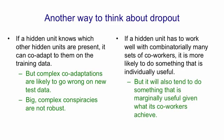But it's also going to tend to do something that's individually useful and is different from what other hidden units do. It needs to do something that's marginally useful given what its co-workers tend to achieve. And I think this is what's giving nets with dropout their very good performance.